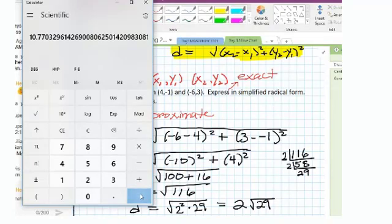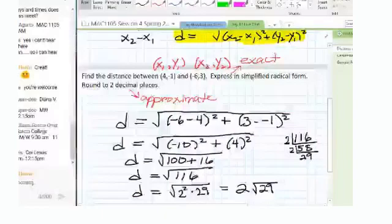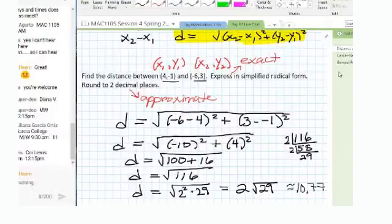Now if you think about it, 10 squared would be 100. It makes sense the square root of 116 would be bigger than 10, square root of 100. And 11 squared is 121, so it makes sense that the square root of 116 would be a little less than 11. So it's reasonable that our approximation would be approximately 10.77. So we just found the distance between 4 negative 1 and negative 6 3 in two different ways: the exact distance, two times the square root of 29, and the approximate distance, 10.77.